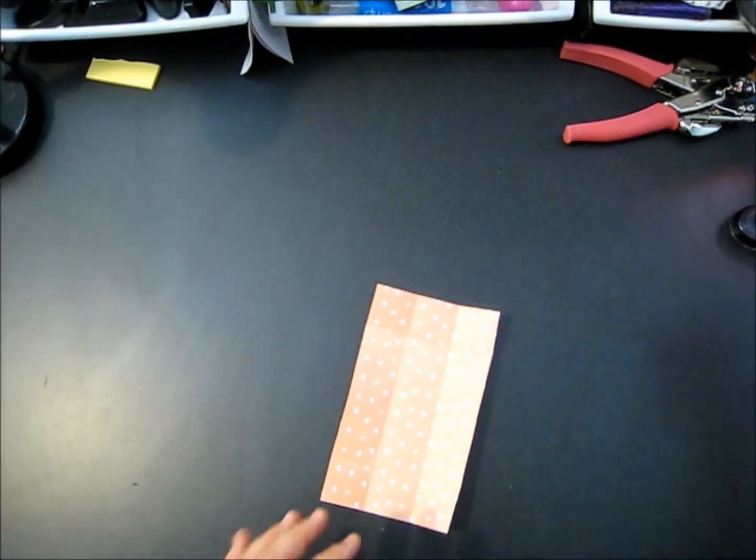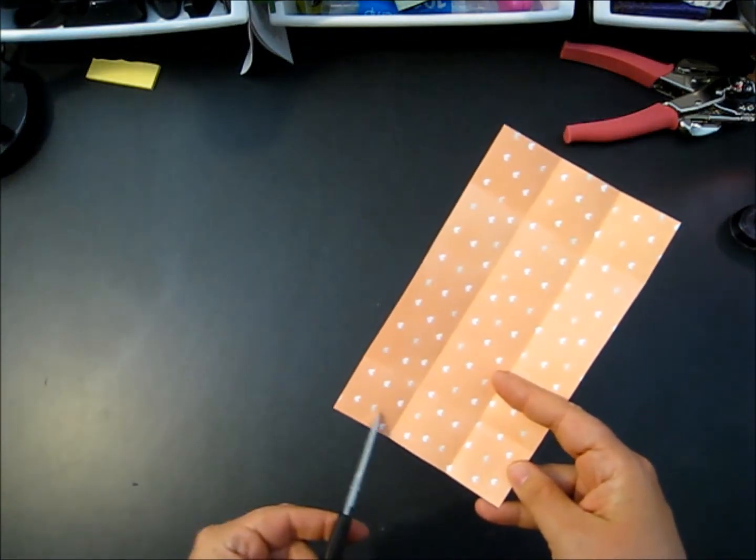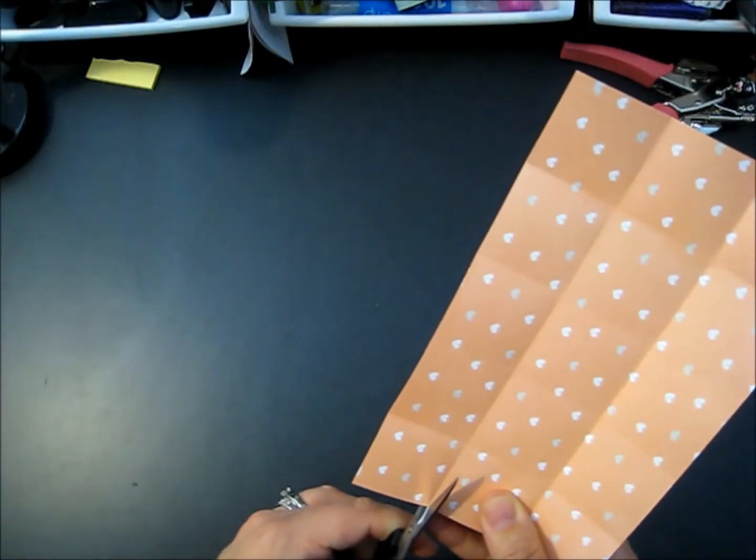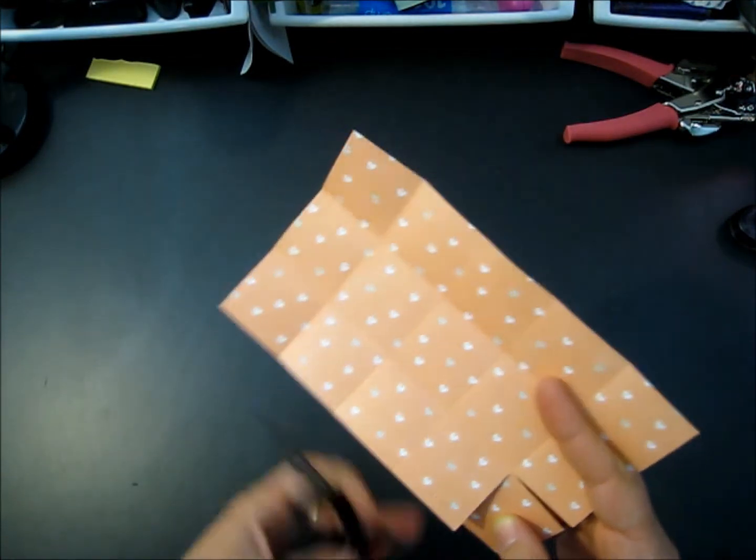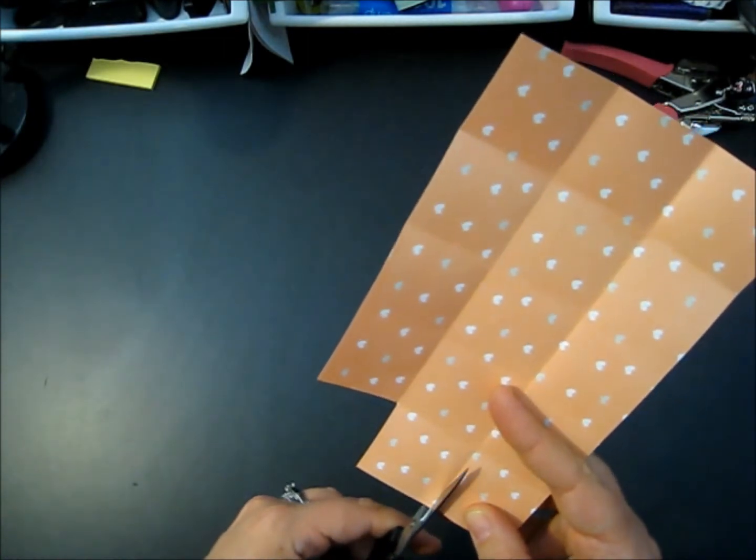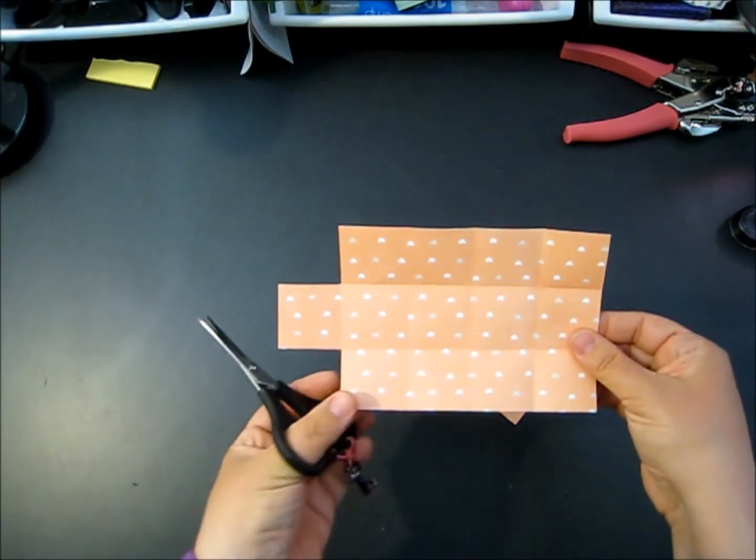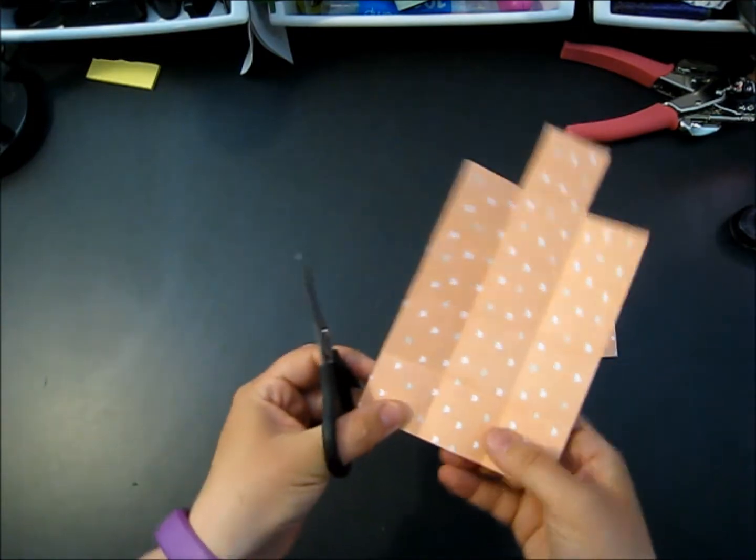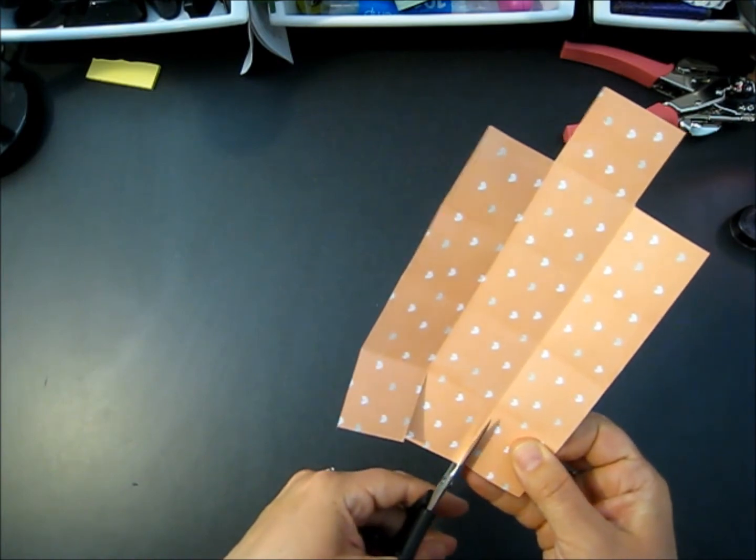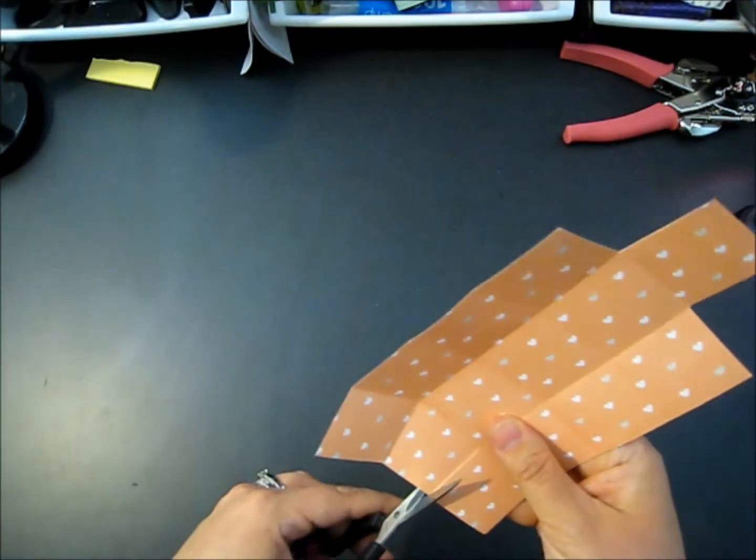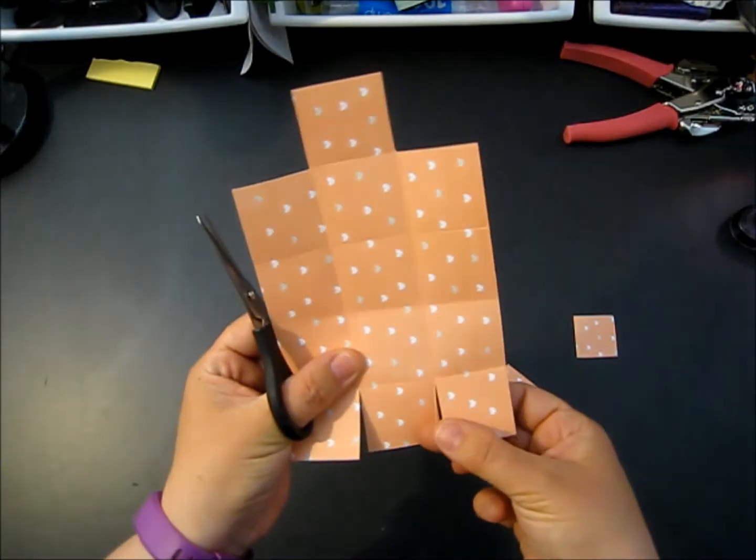Now we're going to need our paper snips. On one of the short ends you're going to remove the squares on the side, this side and this side. So these are going to come completely out. Everywhere else we're going to do slits.